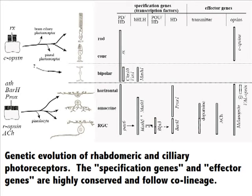What can we learn about the eye from examining the data produced by a field called comparative genomics? If the theory of common descent is true, we should see a pattern of genetic similarity that matches the stages of development of eye complexity.